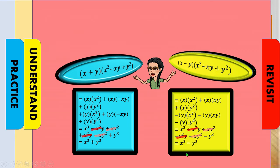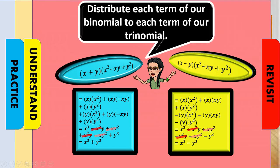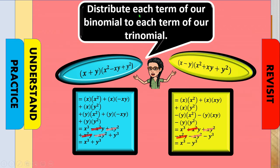With the additive inverses, we are left with x cubed minus y cubed. What we did was distribute each term of our binomial to each term of our trinomial.